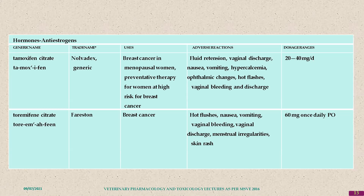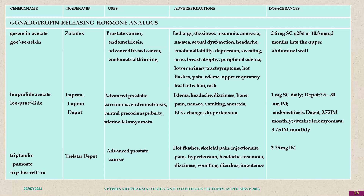Tamoxifen's adverse effects include fluid retention, vaginal discharge, nausea, vomiting, hypercalcemia, and ophthalmic changes. Toremifene citrate is also used in breast cancer. GnRH hormone analogs like goserelin, leuprolide, and triptorelin are all used in prostate cancers. Their side effects include release of FSH and LH and lethargy.